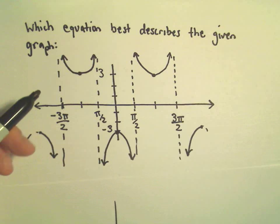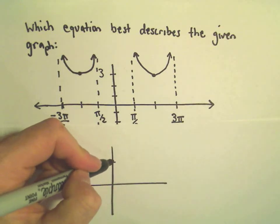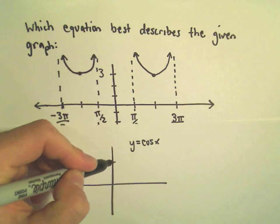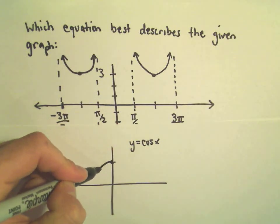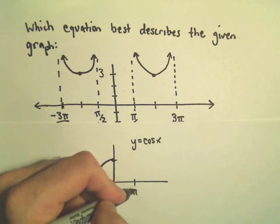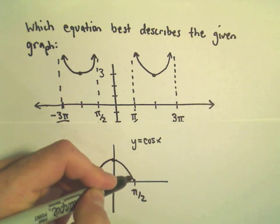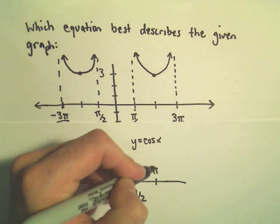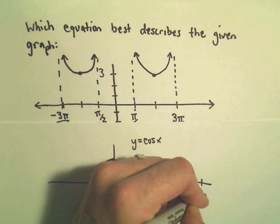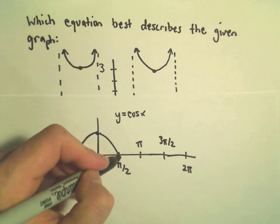Remember if you graph cosine x, cosine of 0 is 1. I'm actually going to graph cosine x here first. It hits the x-axis at negative pi over 2 and also at pi over 2, and then there's pi, 3 pi over 2, and 2 pi.